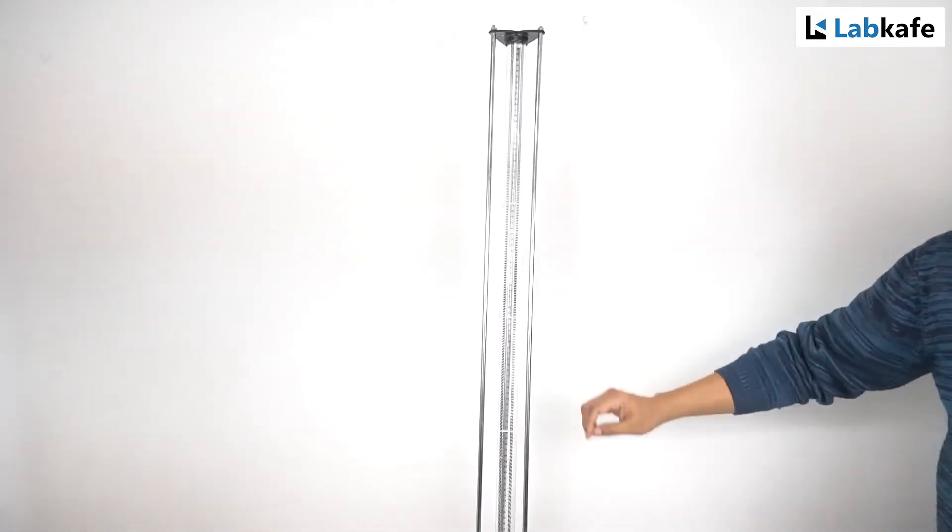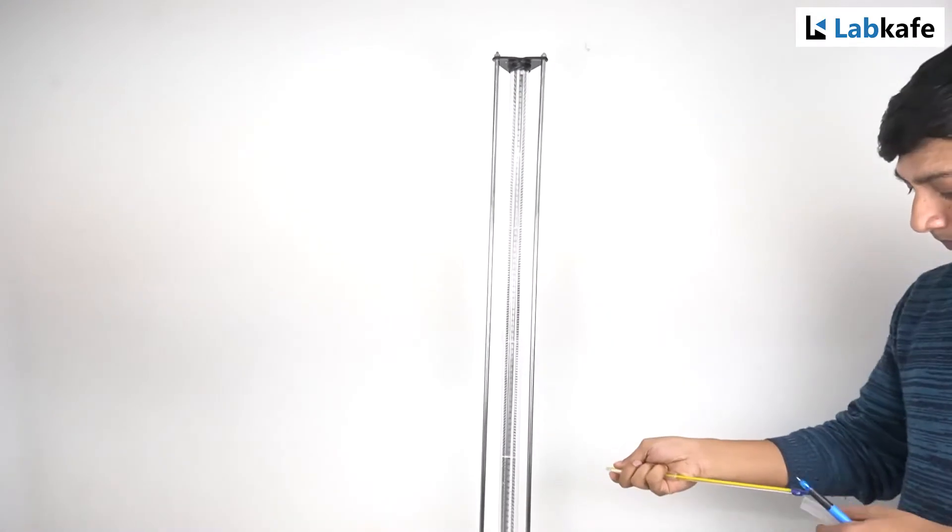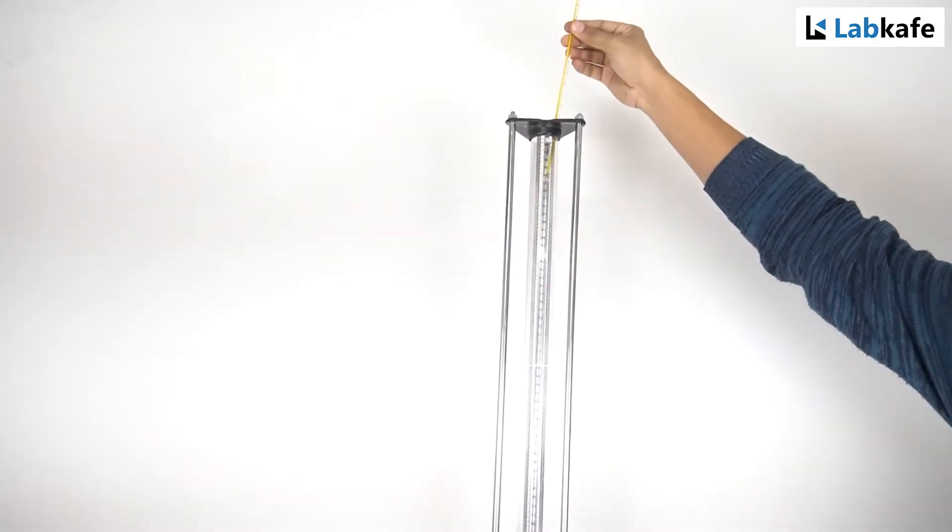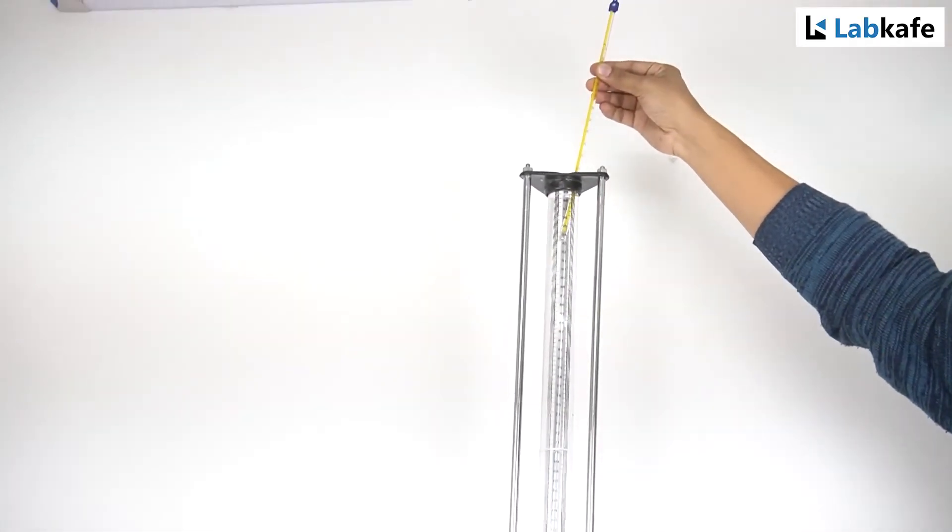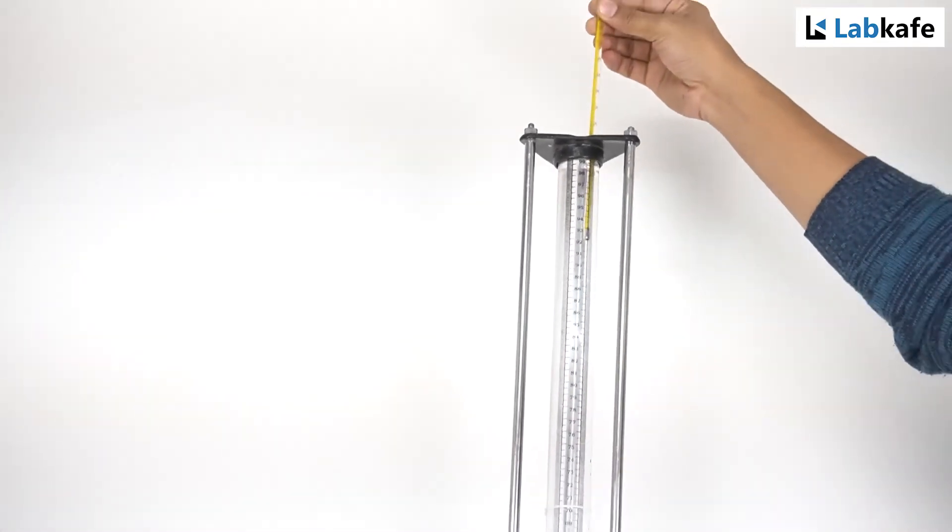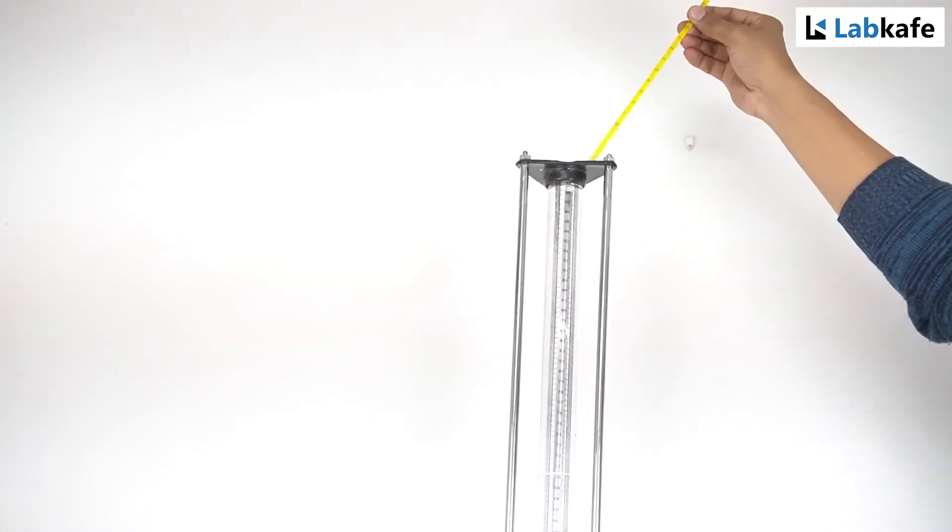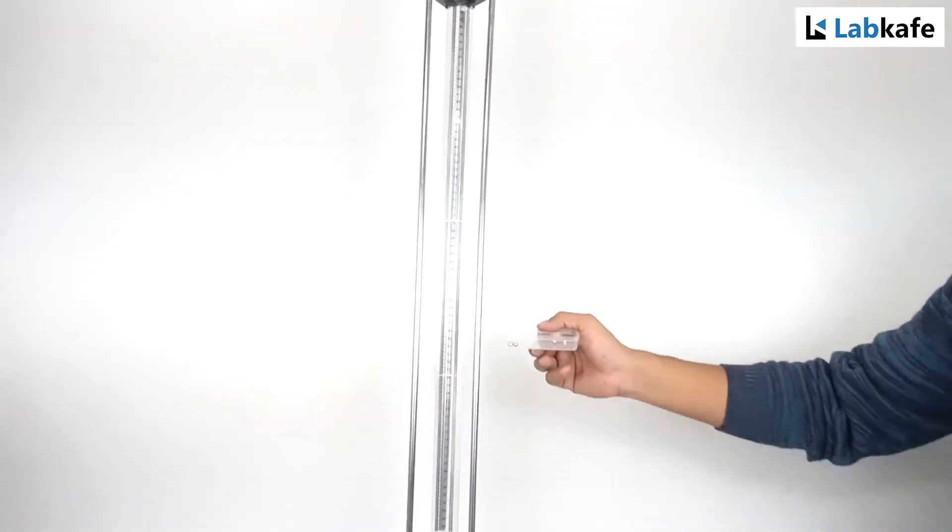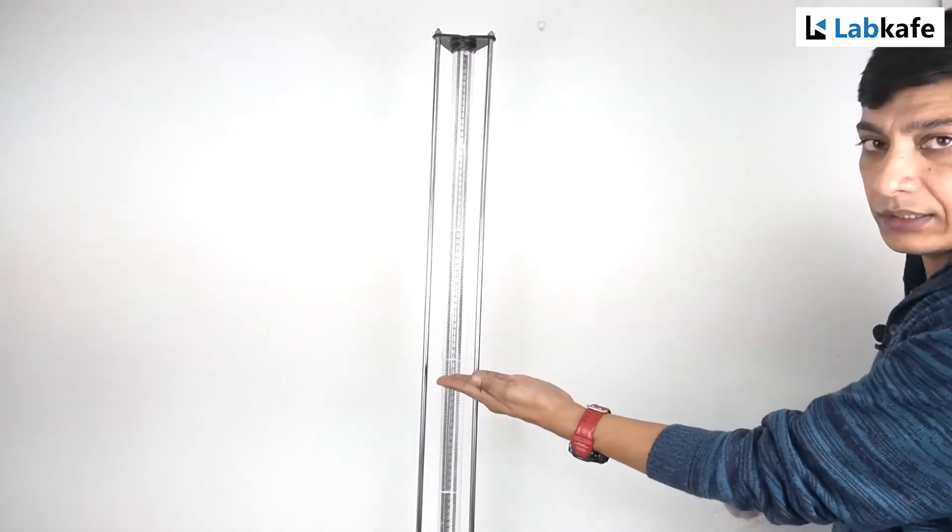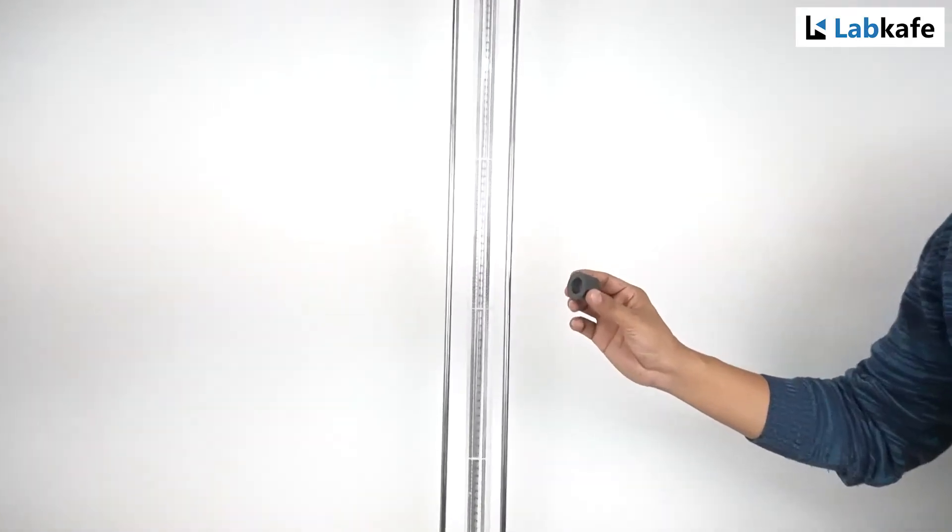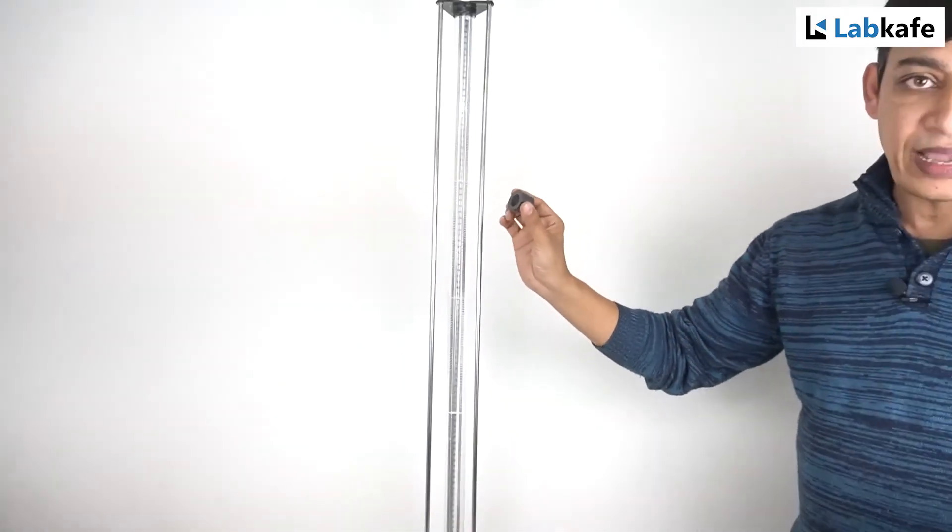First we have to take the temperature of the liquid by thermometer, and the temperature is around 20 degrees. After that we take the diameter of steel balls. I have taken three steel balls and measured the diameter using screw gauge. I also have some magnets to get the balls from the bottom to the top.